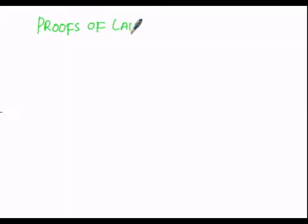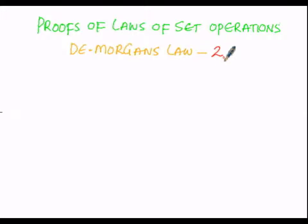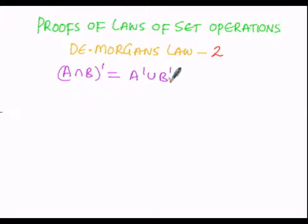Proofs of laws of set operations. Here we are going to prove the laws of set operations, specifically De Morgan's law. De Morgan's second law states that A intersection B whole complement is equals to A complement union B complement.